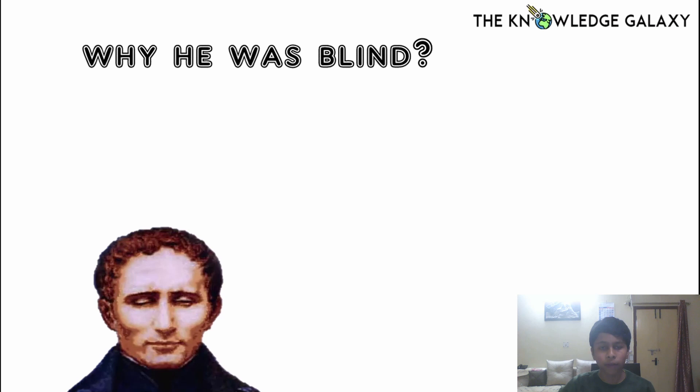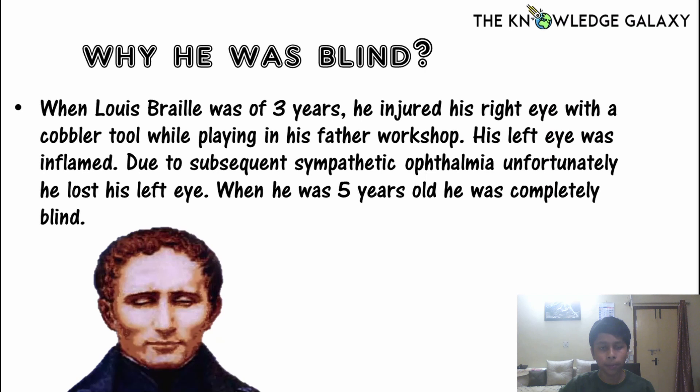When Louis Braille was three years old, he injured his right eye with a cobbler tool while playing in his father's workshop. His left eye was inflamed due to subsequent sympathetic ophthalmia. Unfortunately, he lost his left eye when he was five years old and was completely blind.